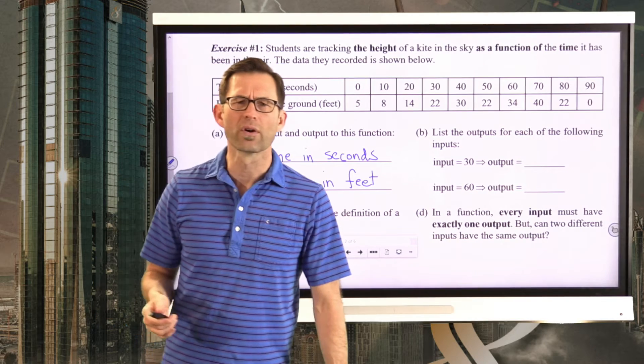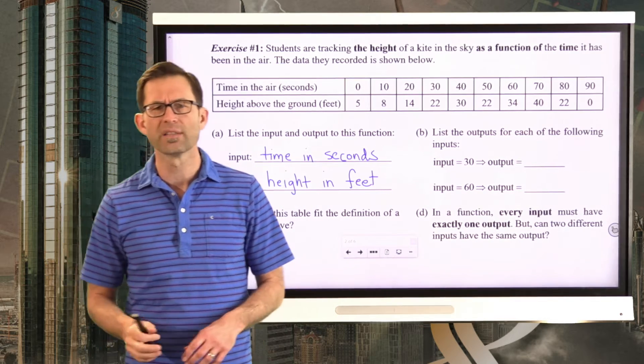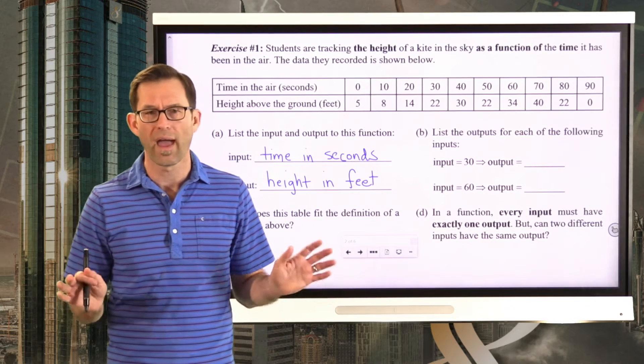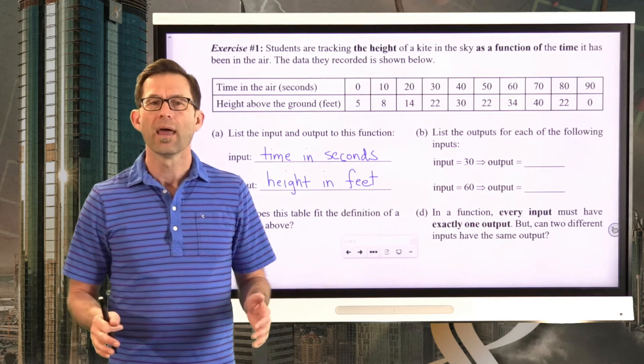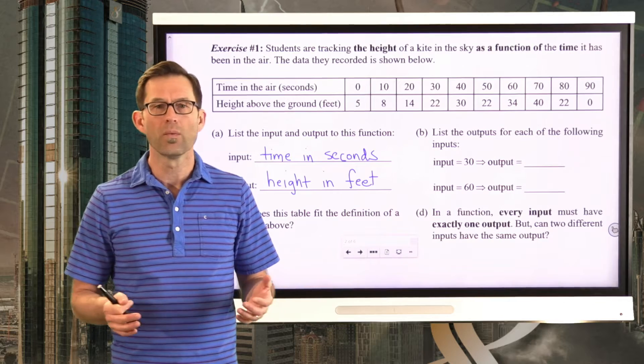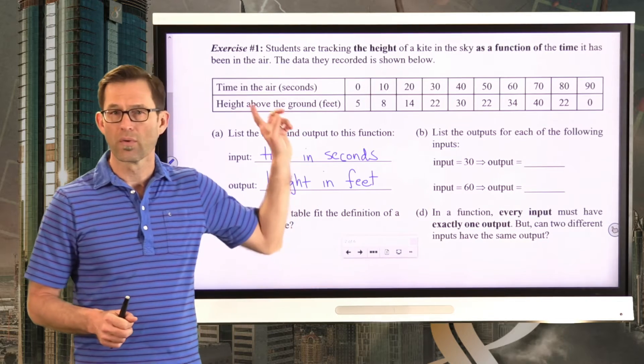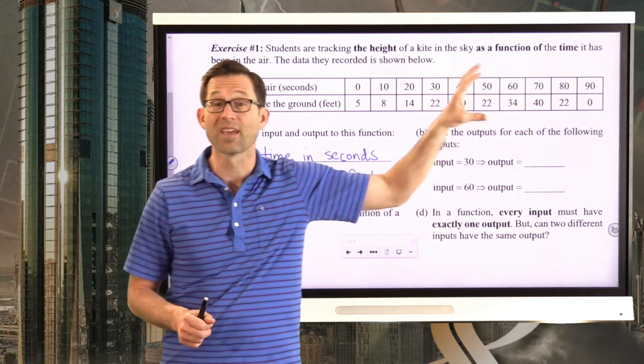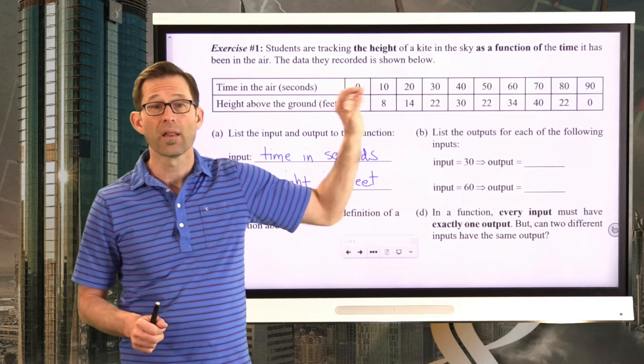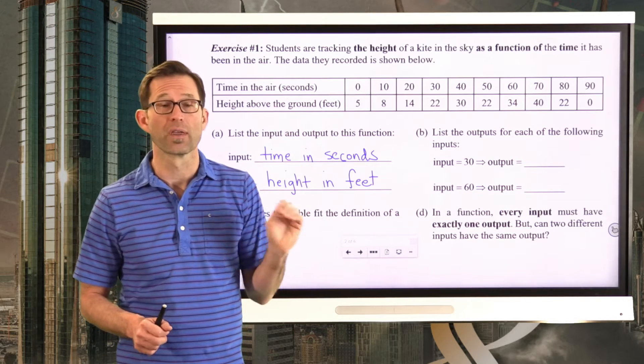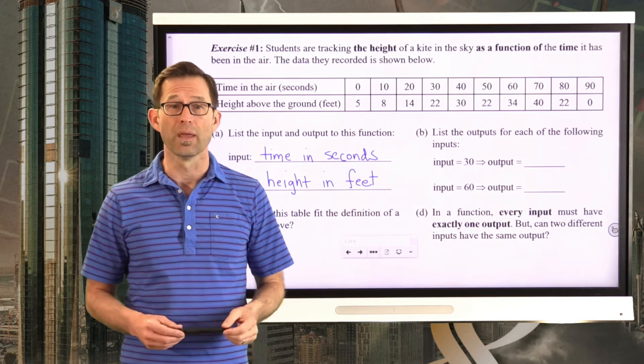So in letter A, when they ask us to list the input and the output to the function, the input is the time in seconds and the output is the height in feet. Now remember, the definition of a function says it's a rule that assigns for every input exactly one output. Now by assigning, what we literally mean is the rule. The rule is this table.